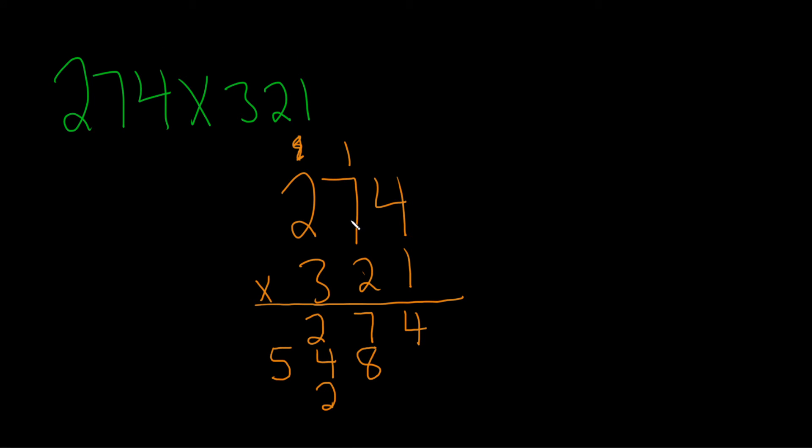3 times 7 is 21, plus 1 is 22. So you write the 2 down and carry the 2. 3 times 2 is 6, 6 plus 2 is 8.